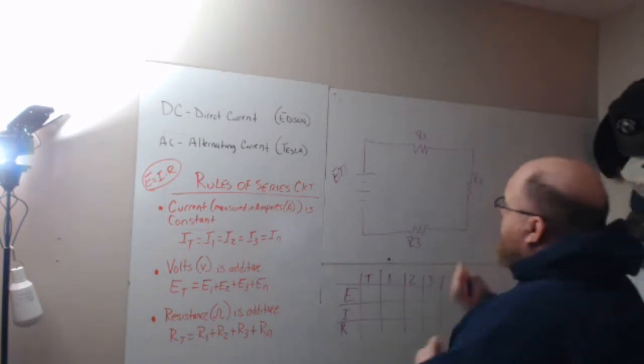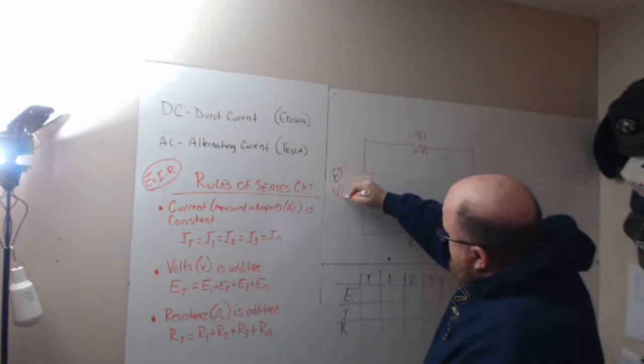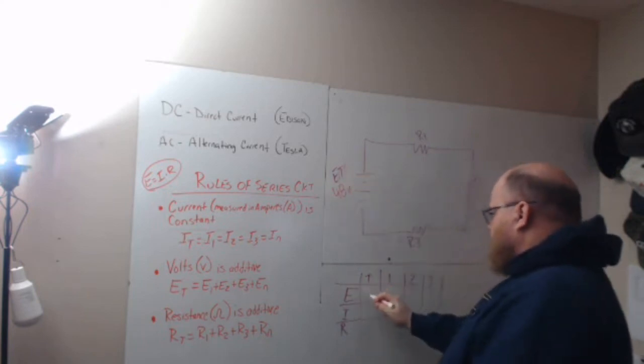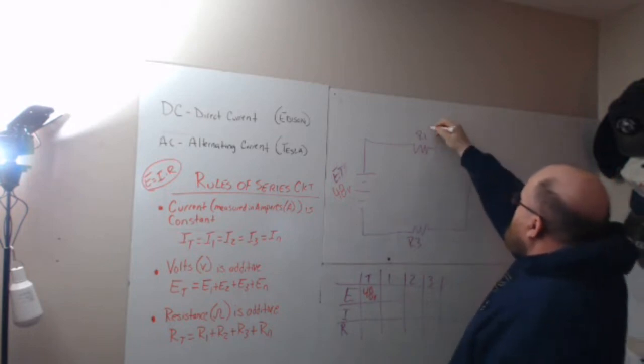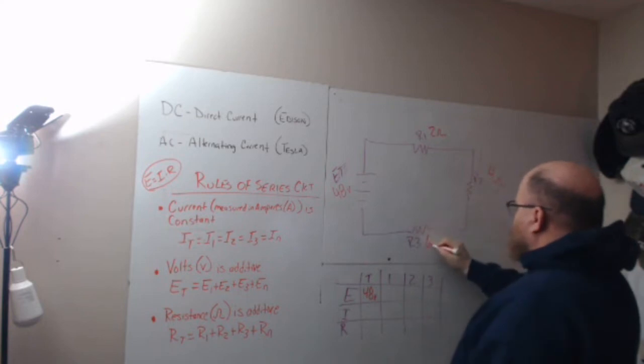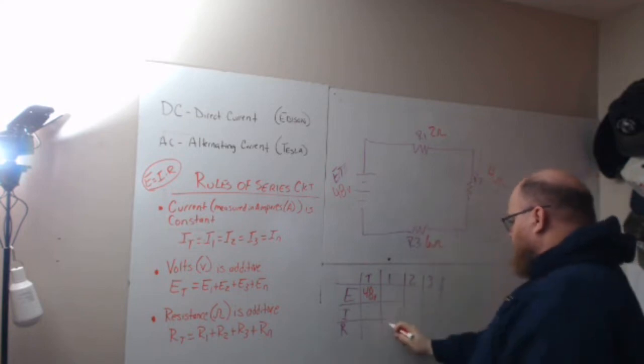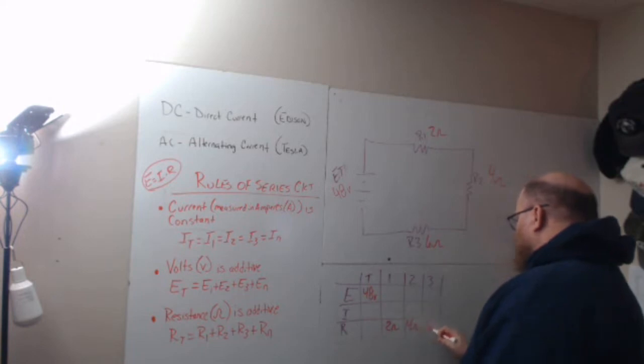Alright. So my total voltage, what I'm going to start with, I'm going to start with 48 volts. So E total in this chart will be 48 volts. We'll do 2 ohms, 4 ohms and 6 ohms. So it's going to be 2 ohms, 4 ohms and 6 ohms.